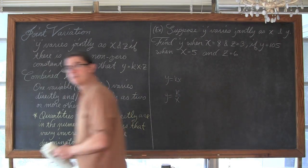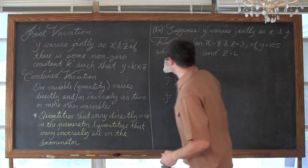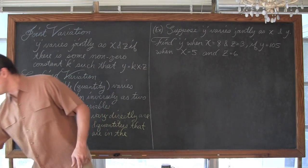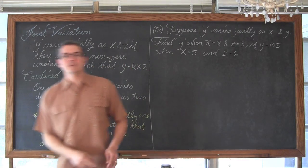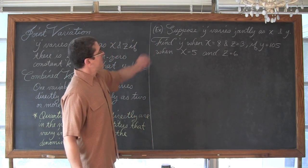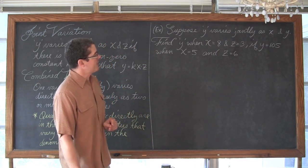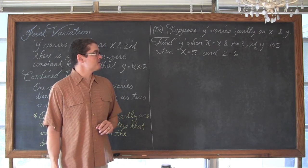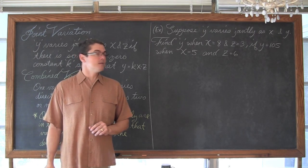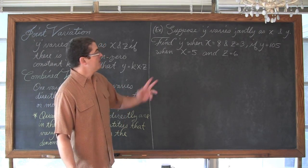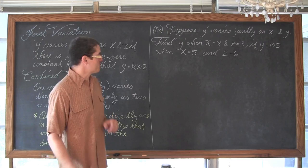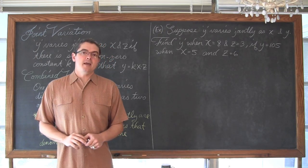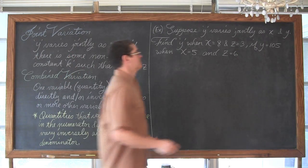Let's get to our first example. We are going to do four in this video. Suppose y varies jointly as x and z. Find y when x equals 8 and z equals 3, if y equals 105 when x equals 5 and z is equal to 6.